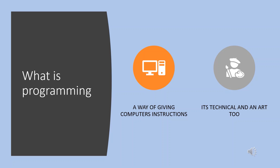What is programming? One task is to do a computer's instructions for programming. For example, if you have a computer, you can use a programmer to do programming. For example, a media player, office — these are used in normal life. If you have a programmer to do programming, it is a function. It is a combination of technical skills and creativity.